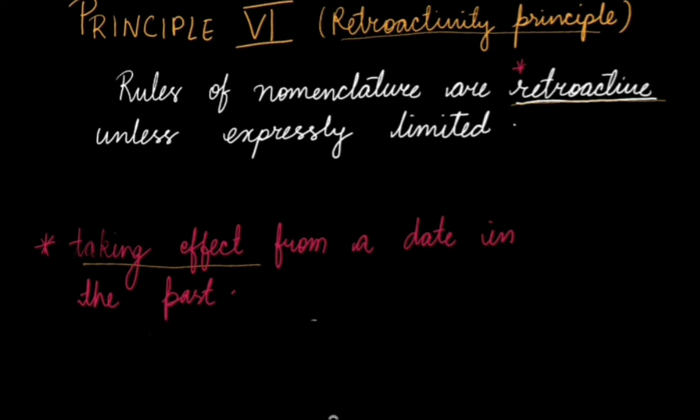So retroactive is completely the opposite of that. Rules of all the rules of nomenclature are retroactive means if today we make a certain rule, it will be applied to all the decisions that were made in the past. But unless, there's a clause, unless expressly limited. So which means unless they tell that today we are making this law and this will take effect from today.